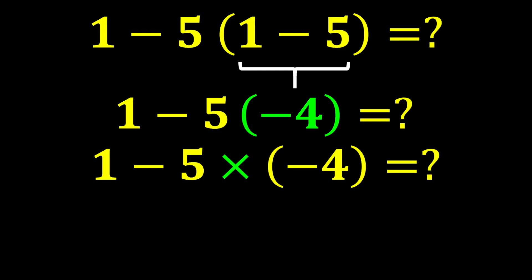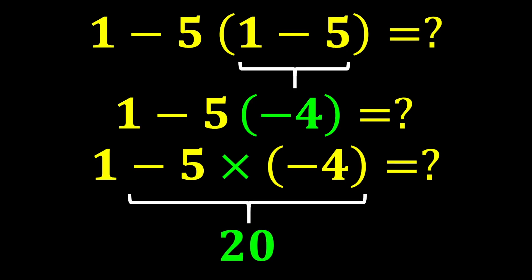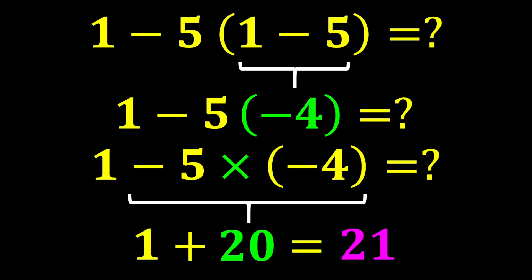In this expression we have both subtraction and multiplication. According to PEMDAS, multiplication has higher priority, so we first calculate negative 5 times negative 4, which gives us 20. Finally, 1 plus 20 gives us 21, and our final answer is 21.